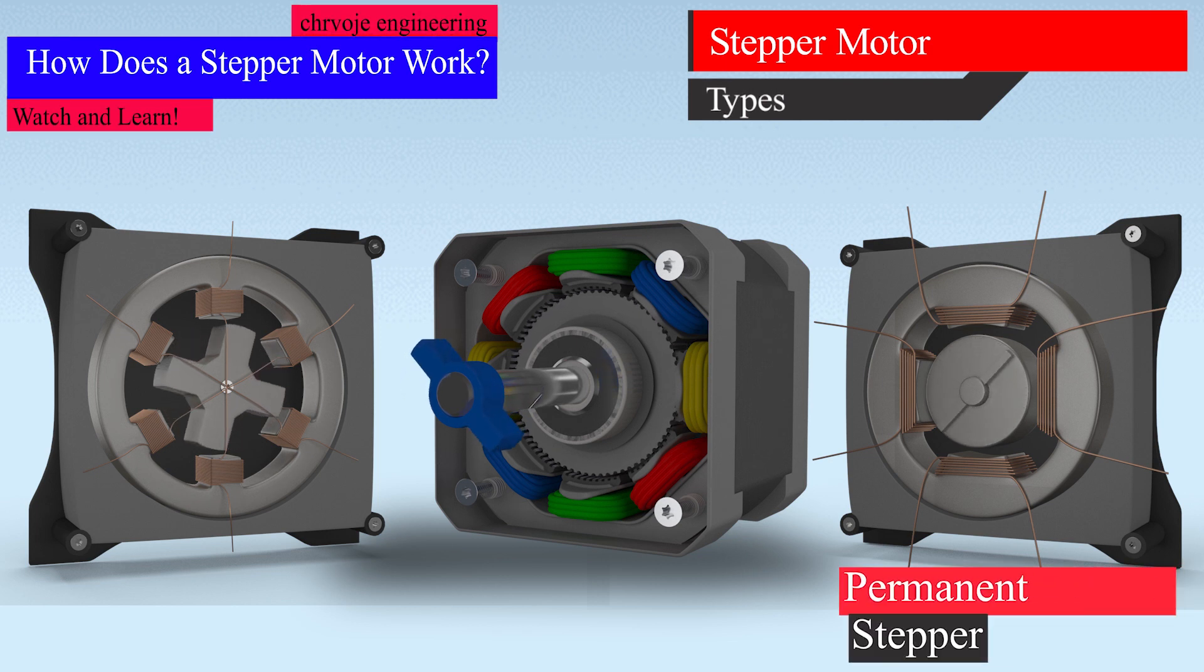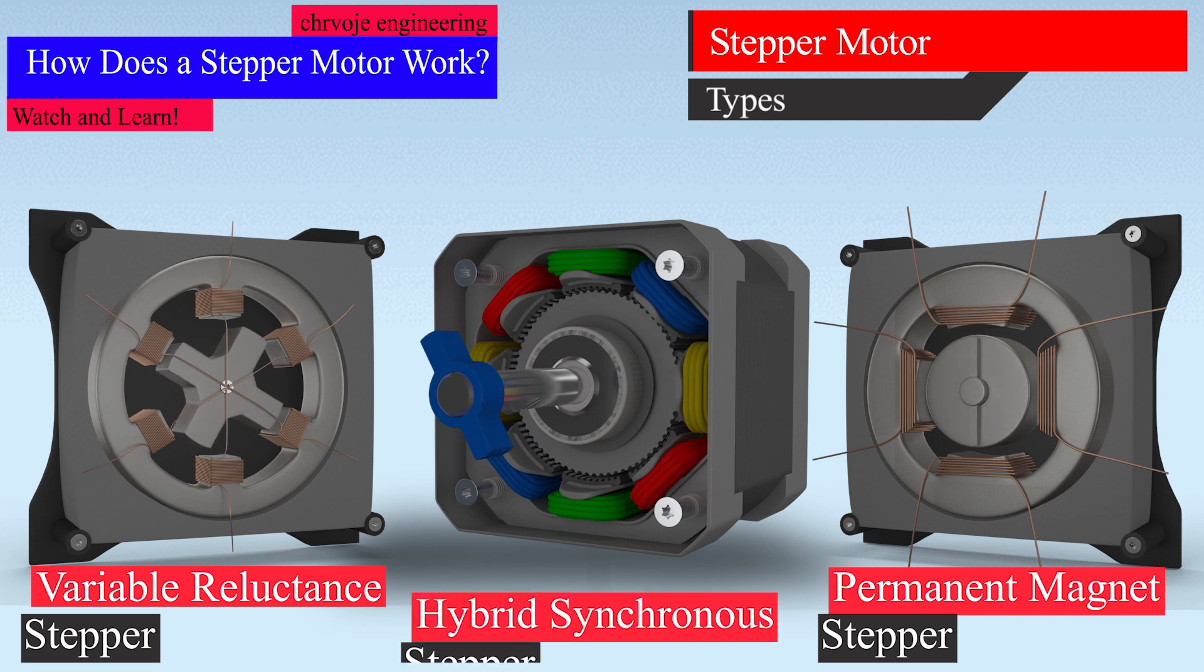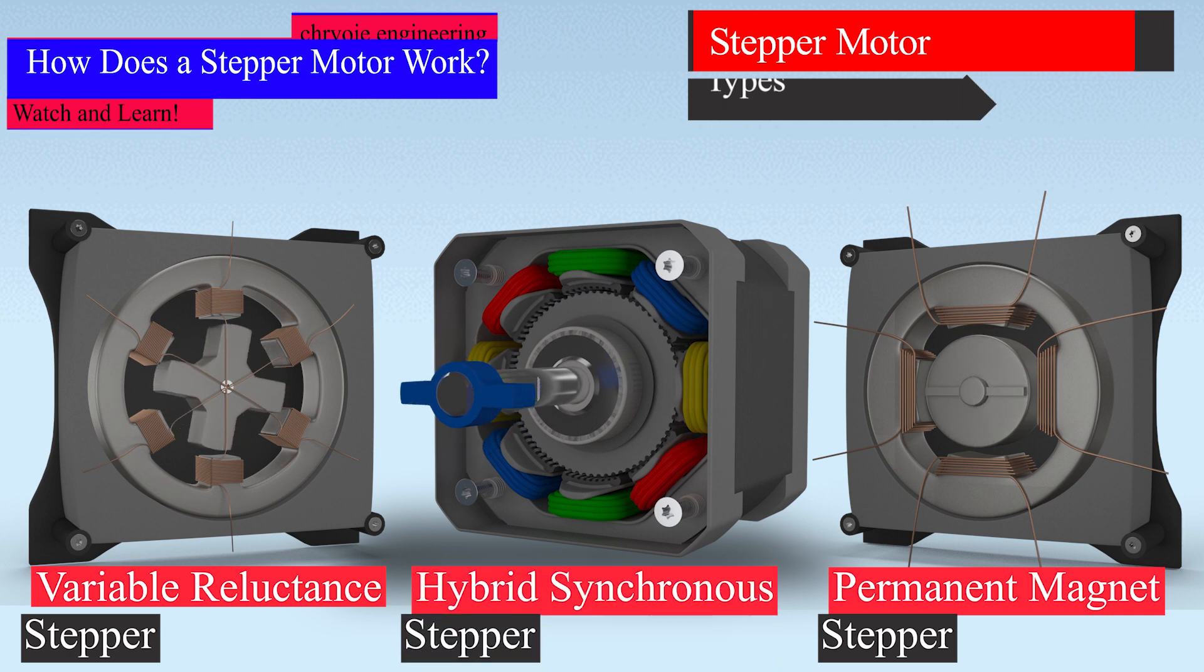There are three main types of stepper motors: permanent magnet stepper, variable reluctance stepper, and the most accepted form, hybrid synchronous stepper motor.